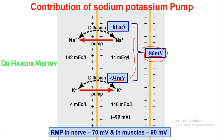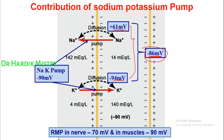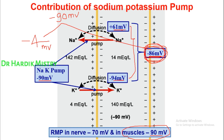Now considering the sodium-potassium pump: it pumps three sodium ions out of the cell and two potassium ions into the cell. So three positive charges leave and two positive charges enter, resulting in a net loss of one positive charge from the intracellular fluid. This means the sodium-potassium pump contributes an additional minus 4 mV. Adding minus 86 mV and minus 4 mV gives a resting membrane potential of approximately minus 90 mV for muscle fiber, while nerve fiber is minus 70 mV.